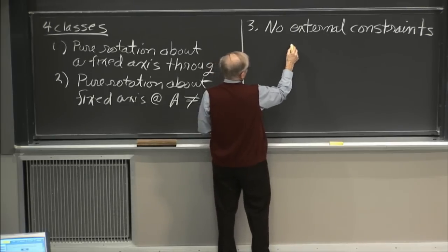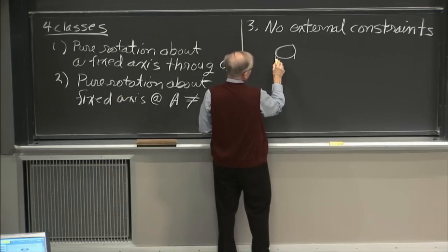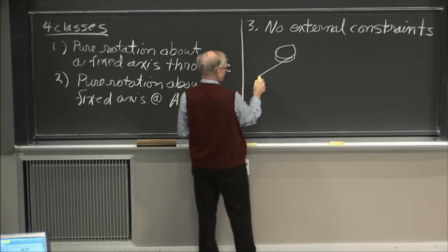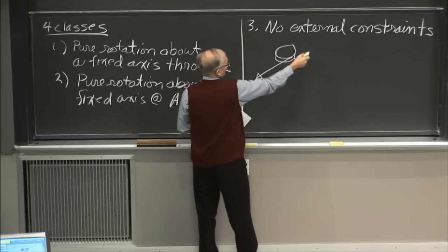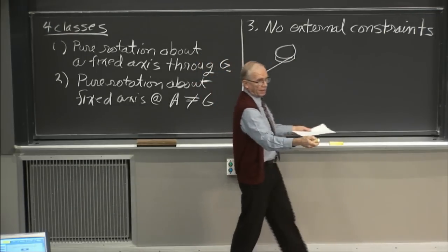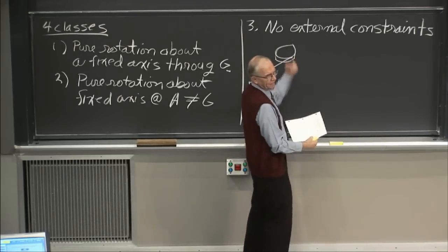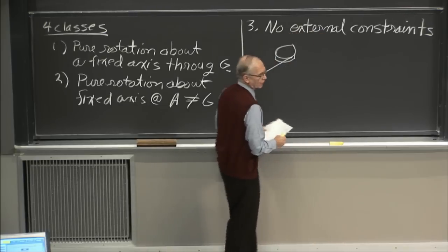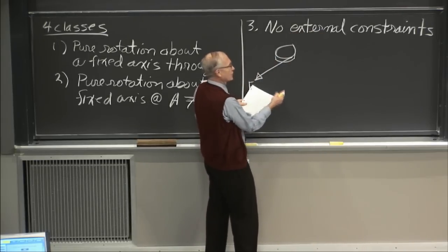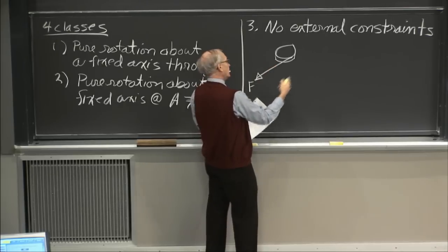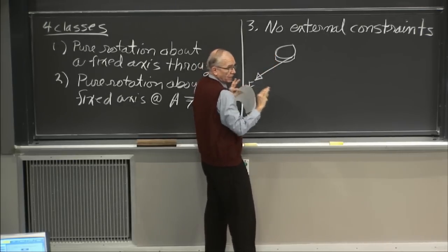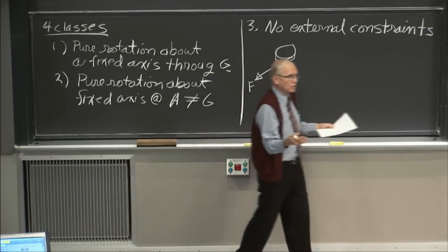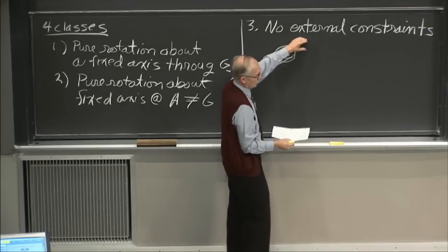I'll give you an example of the third class right now. You have a hockey puck with a string attached to it with a force, and the whole thing is on a frictionless surface. So it's constrained so it can't go through the surface, but there are no external constraints in the direction that the motion can happen. This is a 2D problem — it can move in x, y, and rotation, but nothing constrains it in the directions of allowed movement.